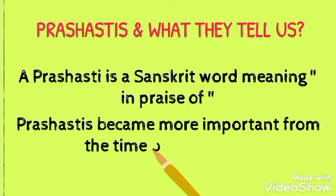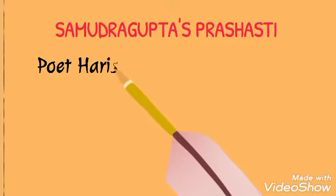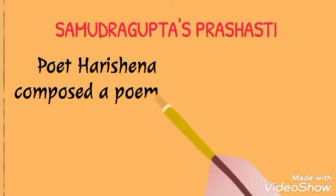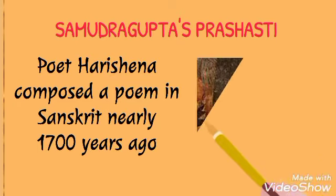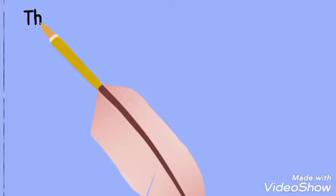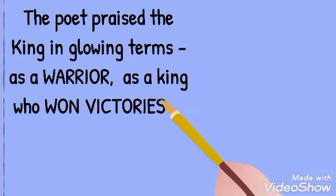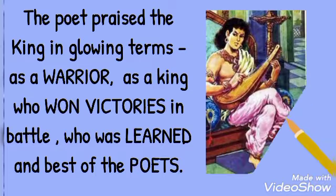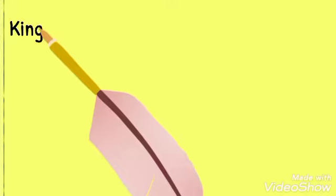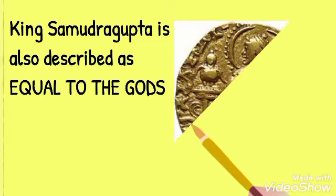Let us look at Samudra Gupta's prasasti. Poet Hari Shena composed a prasasti — a poem in Sanskrit — nearly one thousand seven hundred years ago. The poet praised the king in glowing terms: as a warrior, as a king who won victories in battle, who was learned and the best of poets. King Samudra Gupta is also described by Hari Shena as equal to gods.